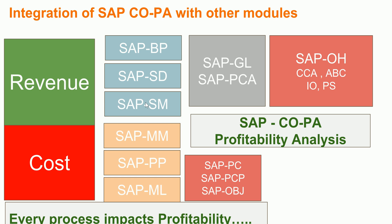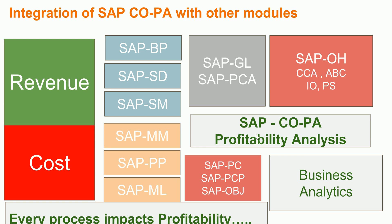All these modules are directly or indirectly related to your COPA module through integration. Sometimes the entire business may not be in SAP — for example, in a multi-country environment some countries may use other software. When you want to analyze profitability data from everywhere, you use SAP BI tools or third-party BI tools to pull data from the SAP COPA module as well as other systems. Business analytics tools are integrated with your COPA module in this way.